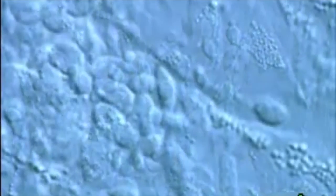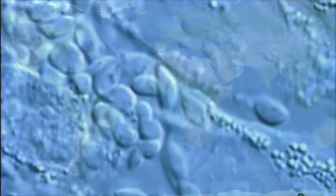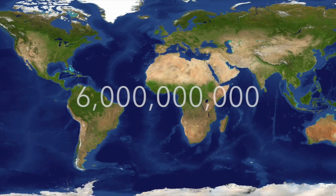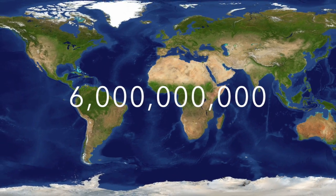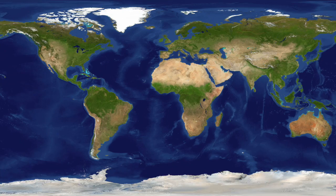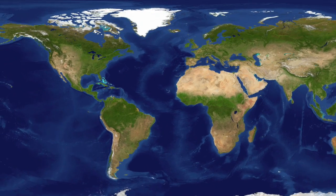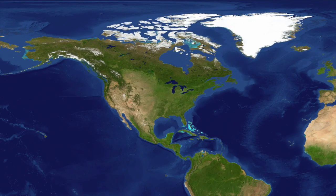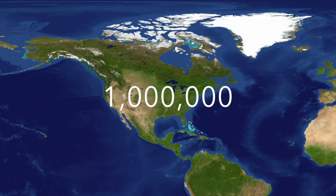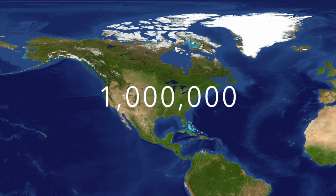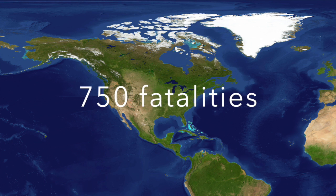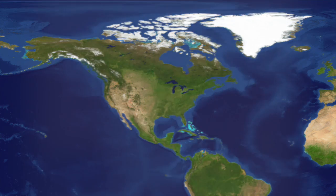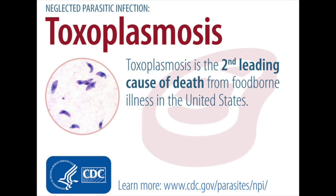Toxoplasma gondii is a fairly common parasite. Over 6 billion people worldwide have been infected. The prevalence of toxoplasmosis is declining in the U.S., but there are still about 1 million new infections each year and 750 deaths. It is the second most common cause of deaths related to foodborne diseases, despite not being well known.